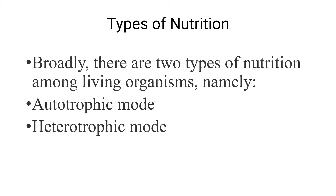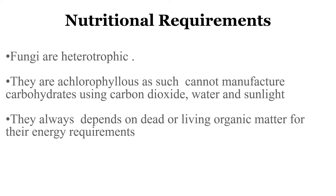Broadly speaking, there are two types of nutrition among living organisms: autotrophic mode, where auto means themselves — they can manufacture their own food like plants and phototrophs which use sunlight to make carbohydrates — and heterotrophic mode. Fungi are heterotrophs; they are achlorophyllous and cannot manufacture carbohydrates using carbon dioxide, water, and sunlight. They always depend on dead or living organic matter for their energy requirement.